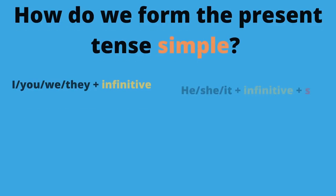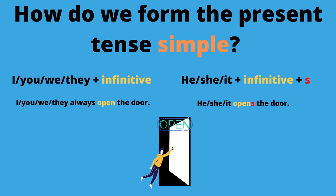The easy part about the present tense simple is the form — you just use the infinitive. You have a verb like 'to open,' 'to close,' 'to fly,' etc., and you use it just like it is. I, you, we, you, they — always open the door. However, for the third person — he, she, it — we add an S. The so-called third person S. So it's not 'he opened the door,' but 'he opens the door.'